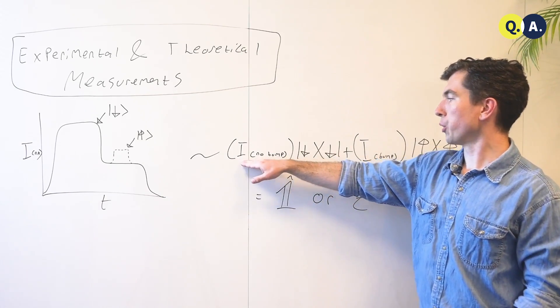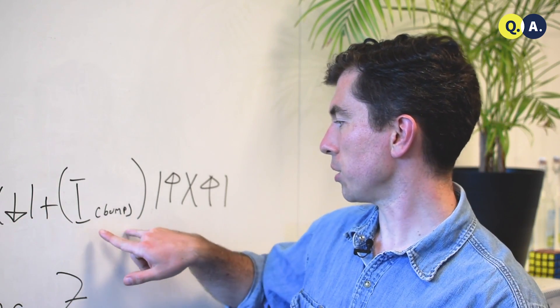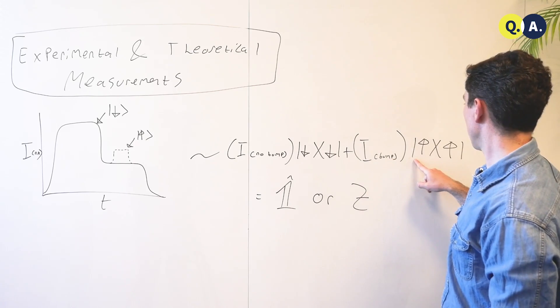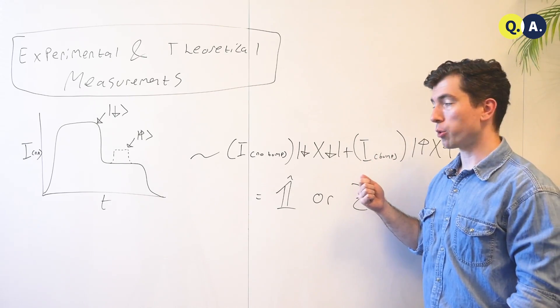So that real number, the amount of current times the projector onto the down state, plus the total amount of current in the case that there is a bump times the projector onto the up state, gives us our measurement operator.